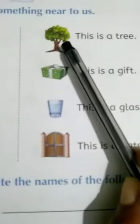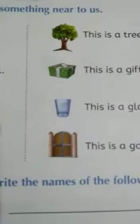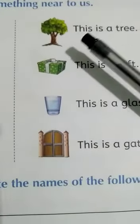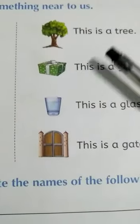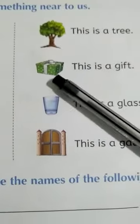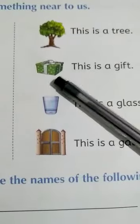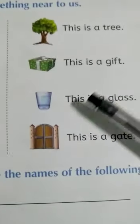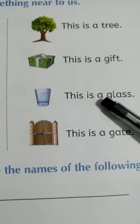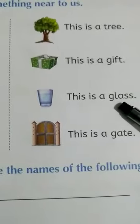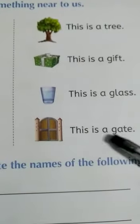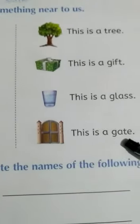Next, look at your — what is this? This is a tree. This is a gift. Next, this is a glass. Next, this is a gate.